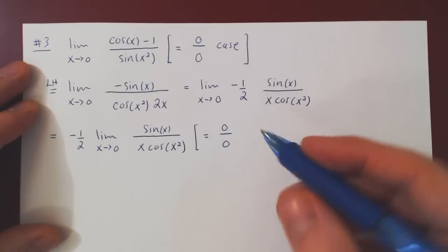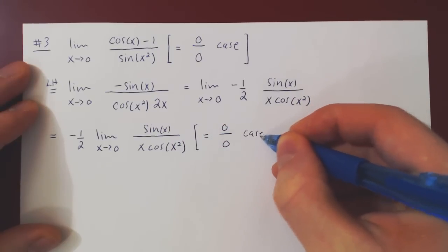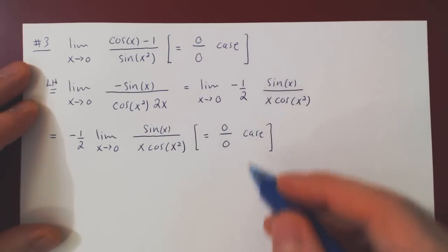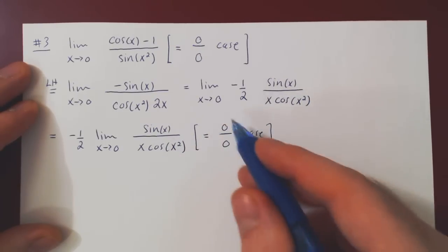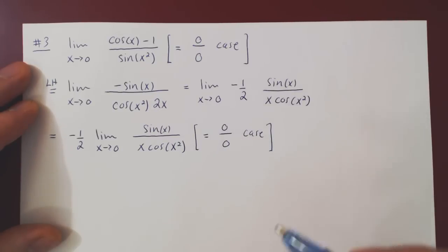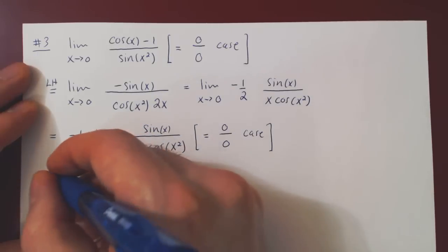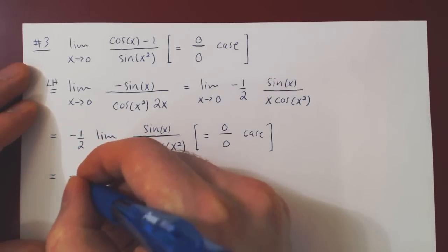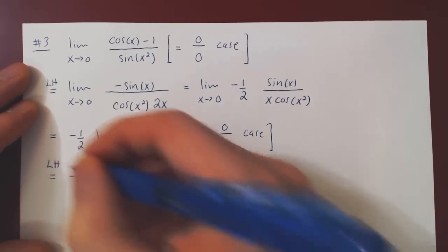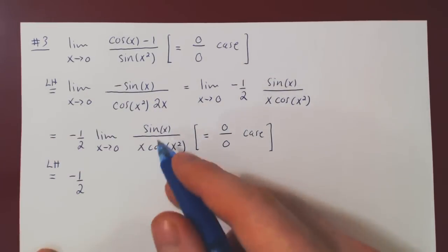But we can once again apply L'Hopital's rule, and hope that the new limit will give us no longer an indeterminate case. So negative 1 half follows along, and we apply L'Hopital's rule on this limit.